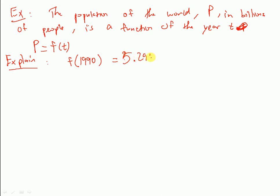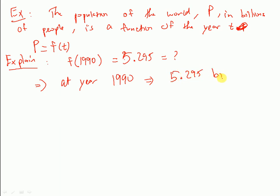f of 1990 equals 5.295. Remember, the function f here represents the population p in billions. So t equals 1990 means at the year 1990, the world population is 5.295 billion people — or written out fully, 5,295,000,000 people.